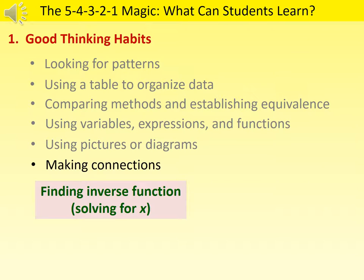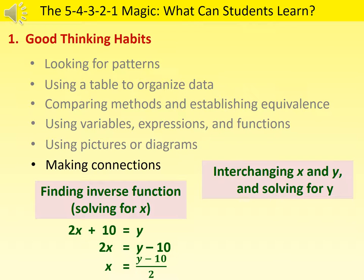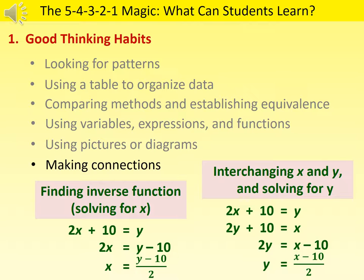For example, after seeing how we can find an inverse function by solving for x in terms of y, a student may suggest another way: interchanging x and y, and then solving for y. We can help students see the connections between these two techniques and resolve any confusion. Interchanging x and y is only a procedural technique, and the equation y equals x minus 10 divided by 2 does not make sense in context, because once we assign a letter to represent something, we must not use that letter to represent something else.